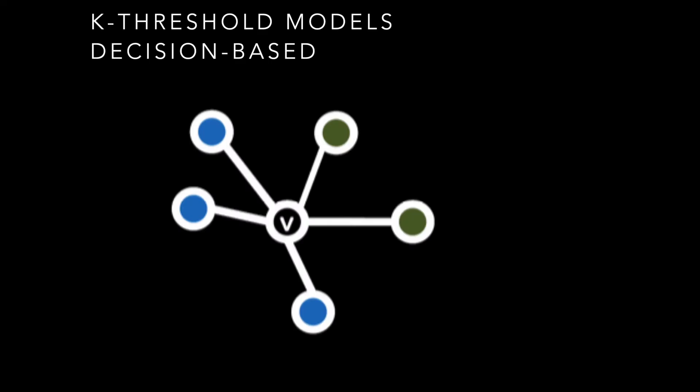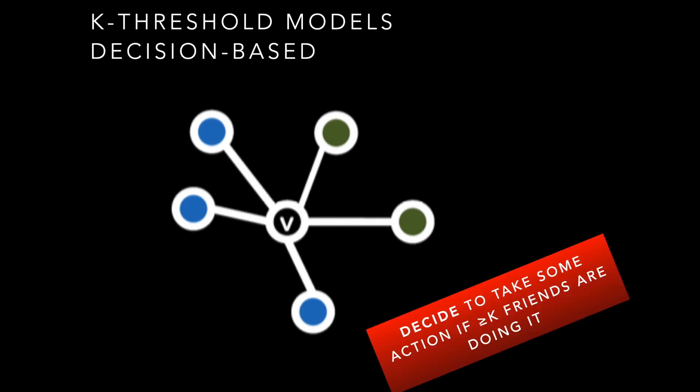In contrast, we have K threshold models, where rather than having some parameterized value P for a contagion, we pin the infection to an individual node. Some vertex V has neighbors, and vertex V decides to take on some action if and only if the number of friends around that node also take that action. We have some threshold value — if I'm connected to five other nodes and more than three take some action, then I too will take that action.